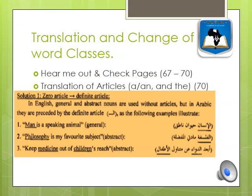Now we turn to the translation and change of word classes — when words change, like from adjectives into nouns or nouns into adjectives. The grammatical categories of words in English are nouns, verbs, adjectives, adverbs, prepositions, articles, and connectors. Sometimes when a noun is translated, it becomes a verb; an adjective becomes a noun; an adverb becomes an adjective. These word class changes create one or two problems for students.